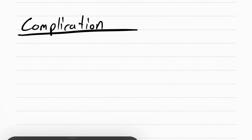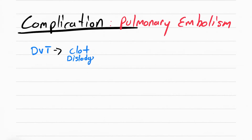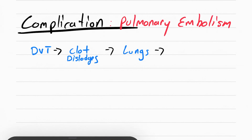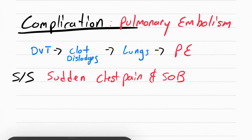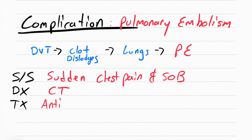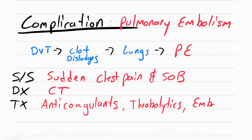A very serious complication that can happen with a DVT is a pulmonary embolism — a clot stuck in the arteries of the lungs. This happens when the DVT clot dislodges and travels to the lung. The patient will have a sudden onset of chest pain and shortness of breath. You want to get a CT scan to confirm a clot in the lungs, then start the patient on anticoagulants, thrombolytics like tPA, or have an embolectomy done.